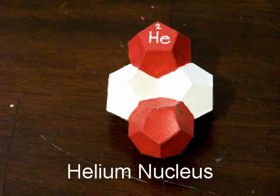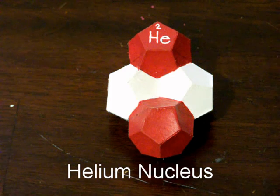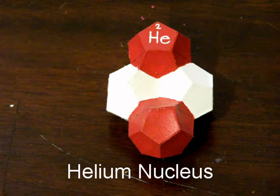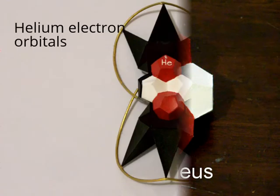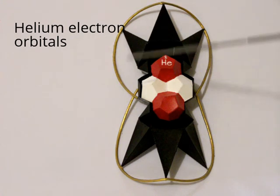So imagine for a moment that a proton and a neutron are dodecahedron by nature. Here we would then have a helium nucleus made up of two protons and two neutrons. But what would the overall atom look like? Following the geometric structure that we've looked at, perhaps the forces generated by the nucleus would look something like this, with the electron orbitals looking something like these.